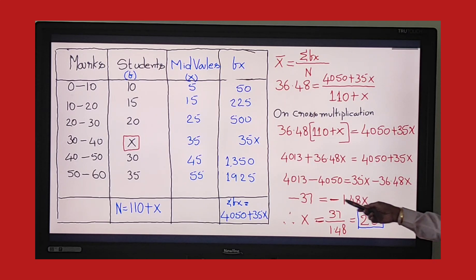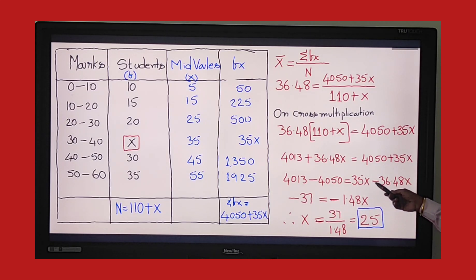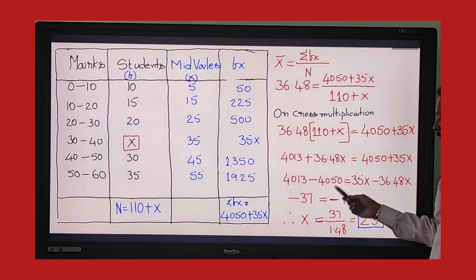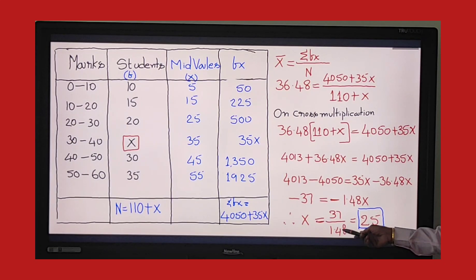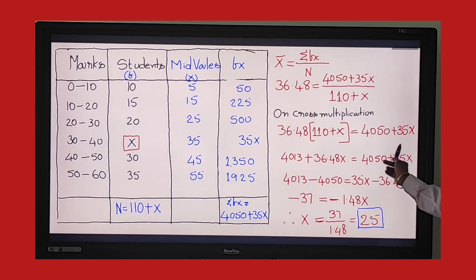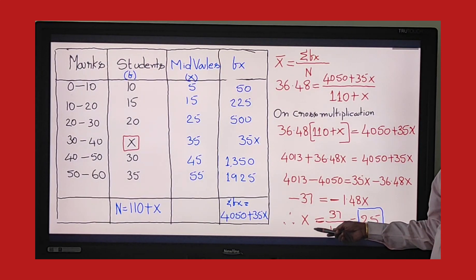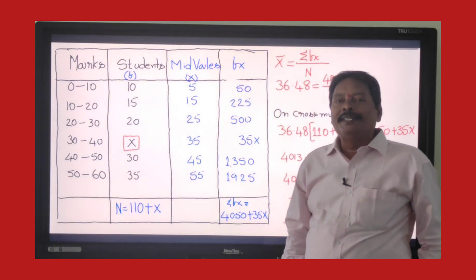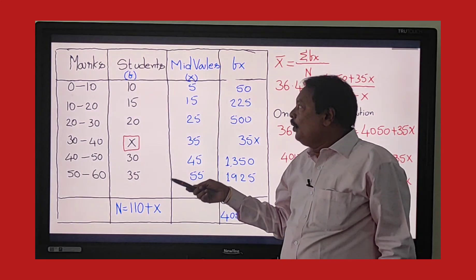Minus 1.48x — two minuses will occur. Minus 37, 35x, 36.48x, minus 1.48x — two minuses will occur. That is equal to 35.48x minus 1.48x, minus 1.48x. The missing frequency, that is the X value — the missing frequency F value.